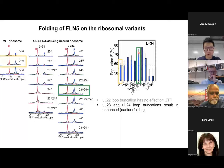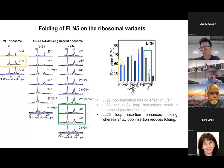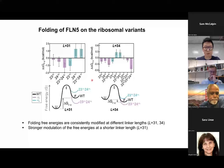When we extend the UL23 loop, we see more folding of the nascent chain, whereas extending the UL24 loop results in reduced folding of the nascent chain. From fluorine NMR, we are able to quantify the folded and unfolded state populations at equilibrium, and based on those populations, we can calculate the free energy of folding on these modified ribosomes. We see a consistent modulation impact of these modified loops on the free energy of folding, and the modulation effect is greater at shorter linker length than at longer linker length.